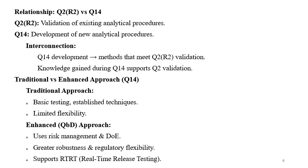Coming to the relationship between Q2 and Q14: Q2 is for validation and Q14 is for development. ICH Q2 is for validating existing analytical procedures, while Q14 is for developing new analytical procedures. There is an interconnection — Q14 development produces methods that meet Q2 validation requirements, and knowledge gained during Q14 development supports Q2 validation.